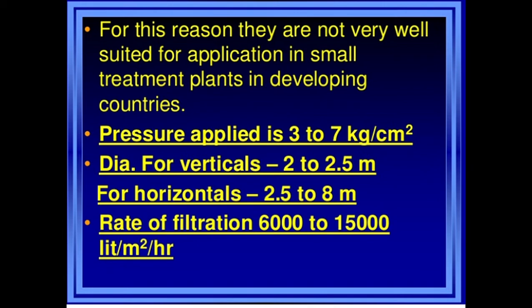Pressure filters operate at a pressure of about 3 to 7 kg per centimeter square. The diameter for vertical filters is about 2 to 2.5 meters, and for horizontal filters the diameter varies from 2.5 to 8 meters. They have a high rate of filtration of about 6,000 to 15,000 liters per meter square per hour.